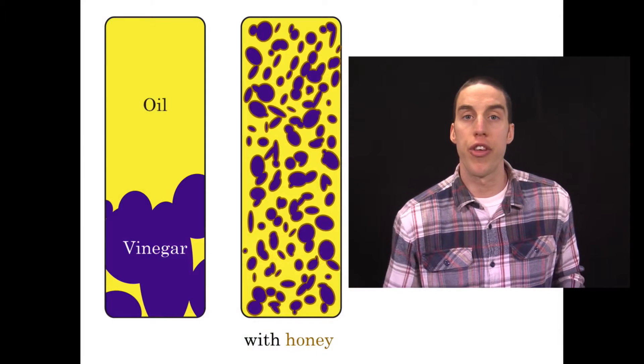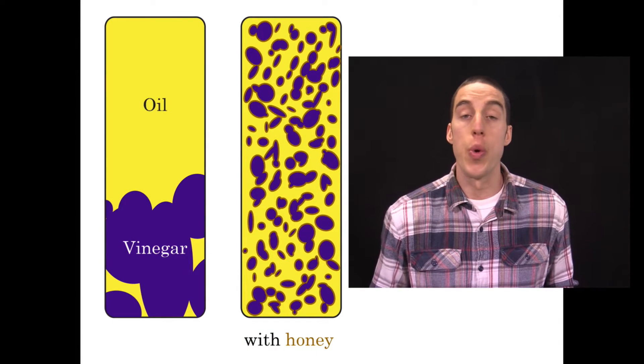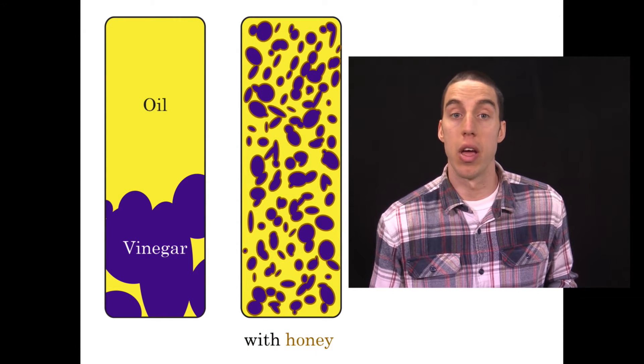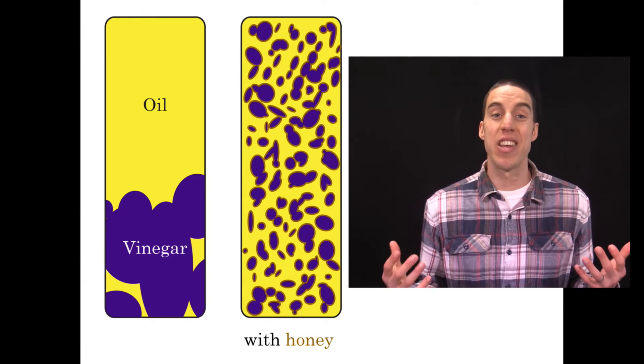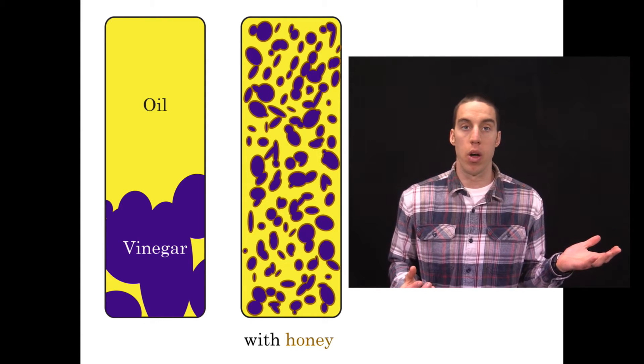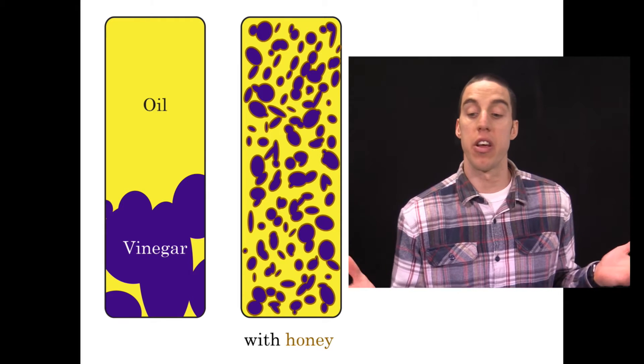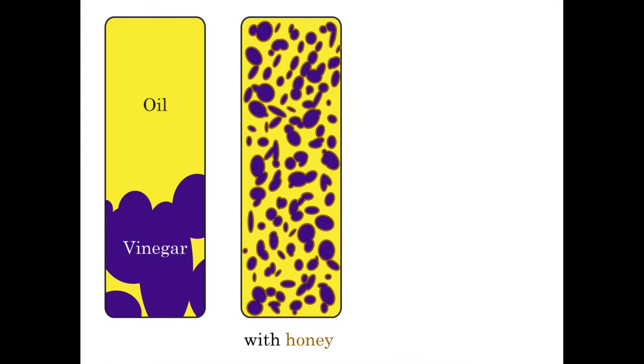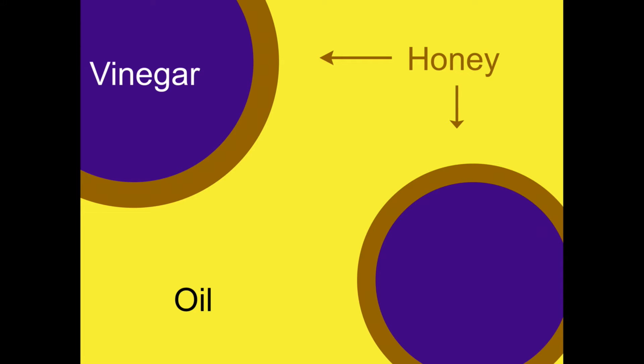To fix our mixing crisis and make a salad dressing, we can add a third ingredient like honey. Oil and vinegar hate touching each other, but there are parts of the honey that like the oil and other parts that like the vinegar. The honey squeezes itself in between the oil and vinegar to create a barrier. They are no longer touching, so there is no separation.